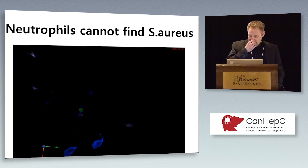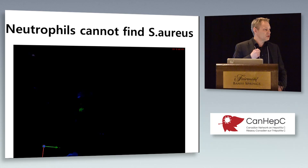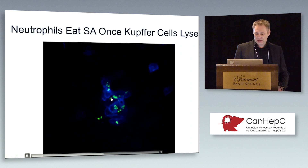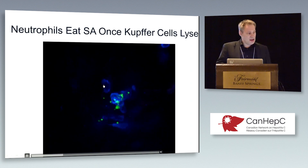The blue guys are neutrophils, the purple are Kupfer cells, the green is a bacterium. The neutrophils run right past these infected cells — they don't see them as long as the staph is hiding inside. Every so often we can actually watch one of these Kupfer cells lyse, and when they lyse, these blue neutrophils come charging in. You can see this one is really hungry — he takes up most of the food and runs off. I have someone in my family like that.